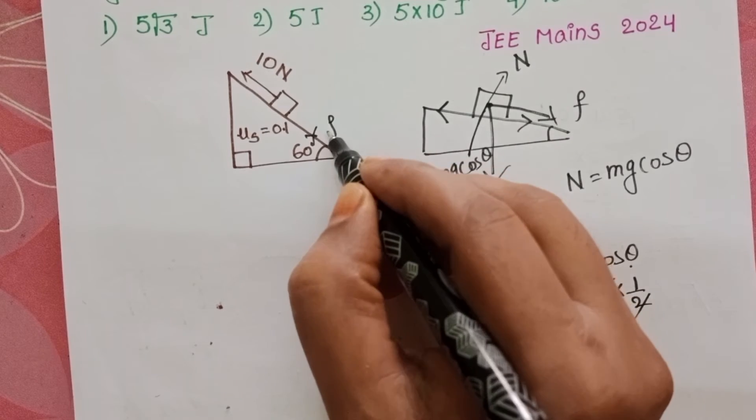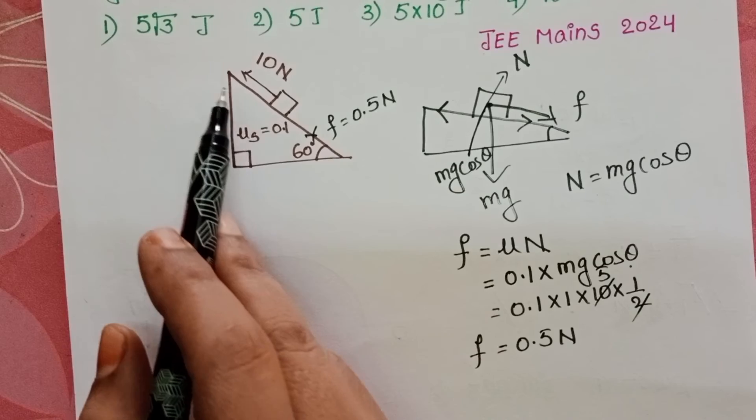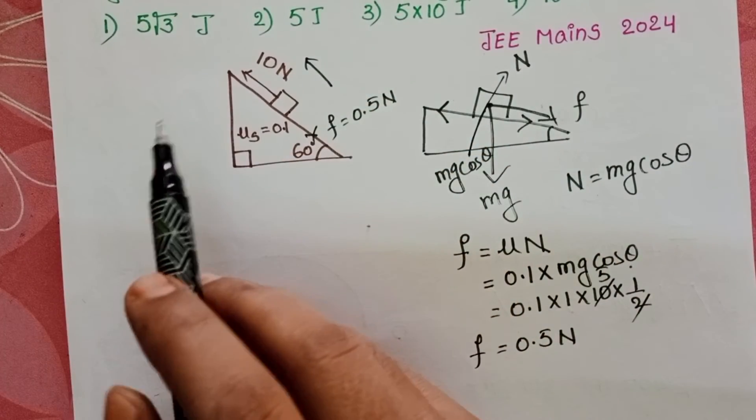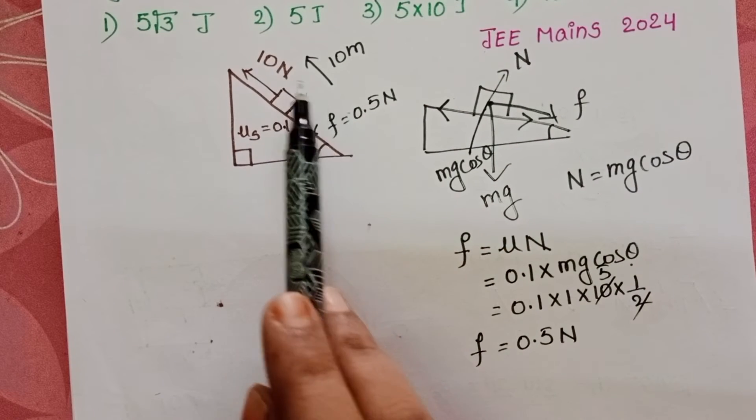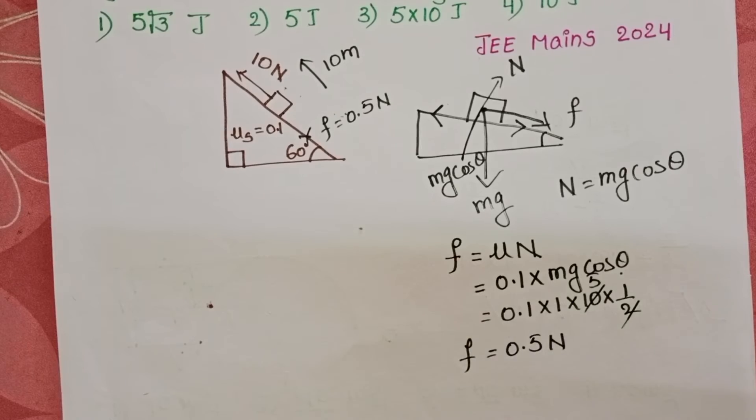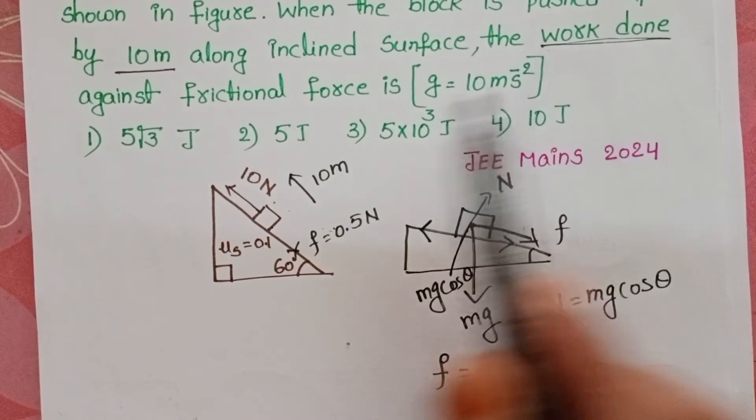This is the direction of the frictional force, and this is the direction of the motion of the body. The distance traveled by the body is 10 meters. These two are acting in opposite directions. In this question, we have to find out the work done against the frictional force.